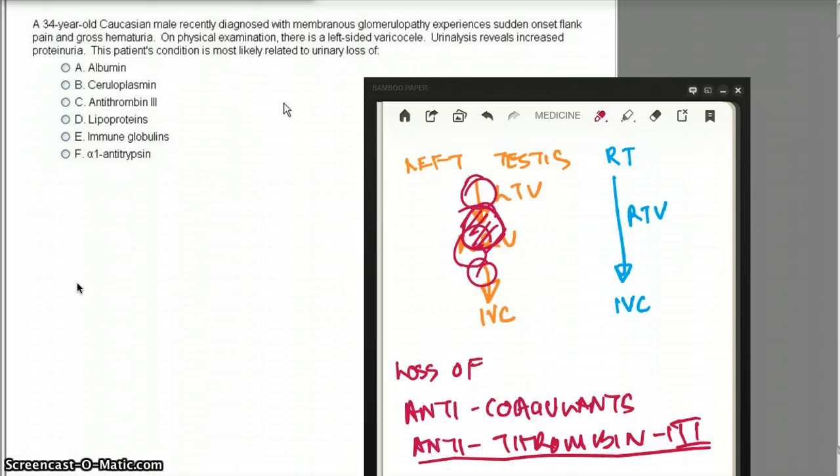Ceruloplasmin. Serum ceruloplasmin is decreased in Wilson's disease. There is no role for ceruloplasmin in the pathogenesis of nephrotic syndrome. So not related.